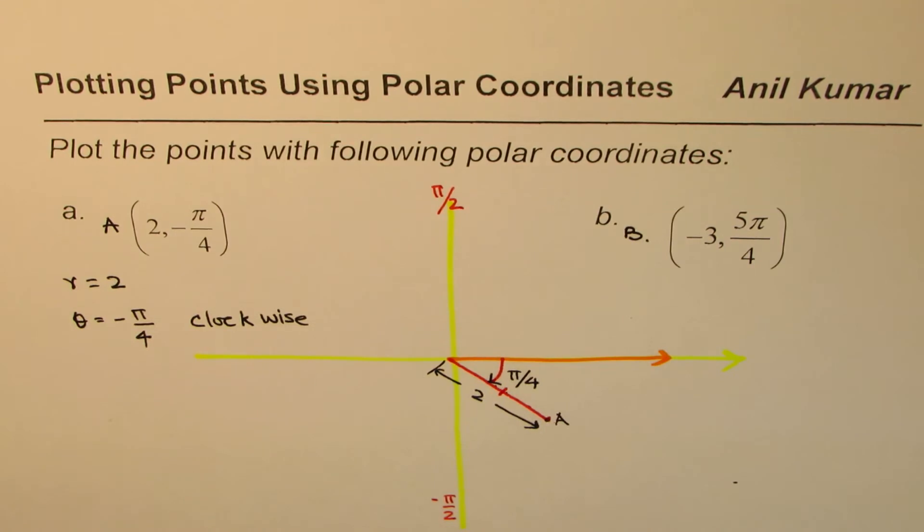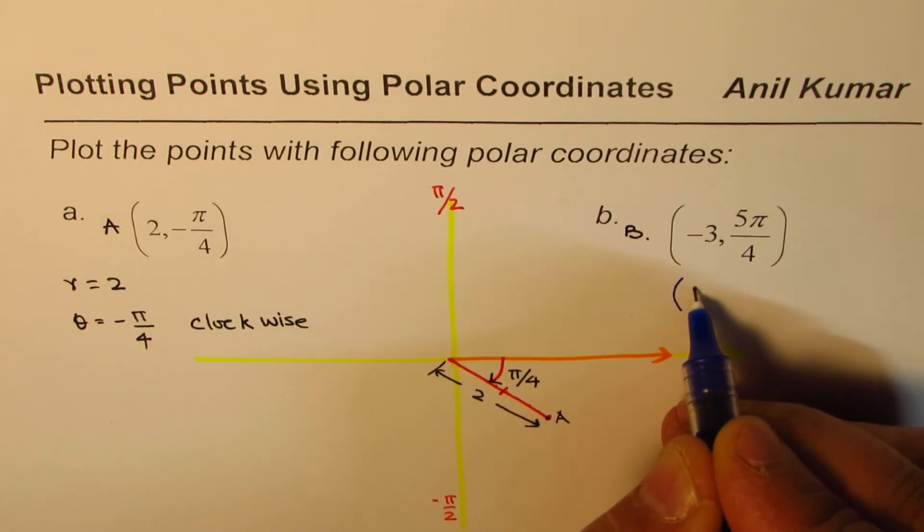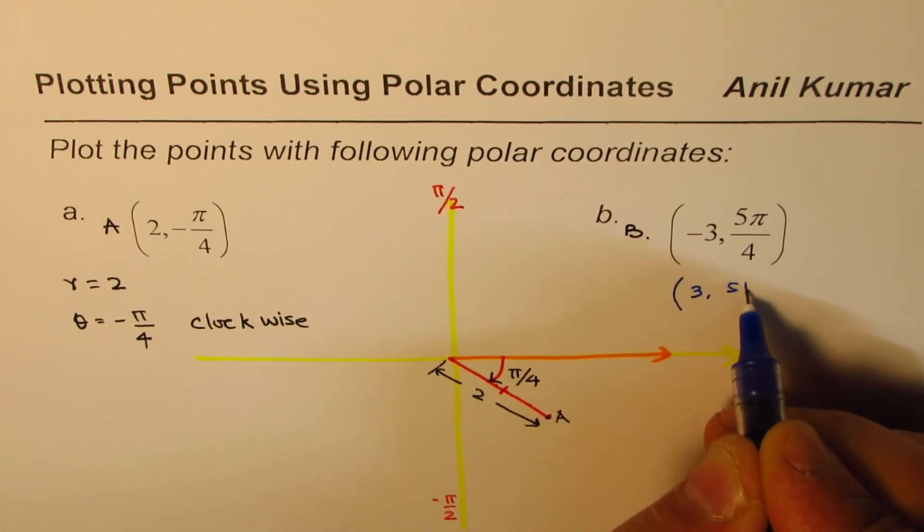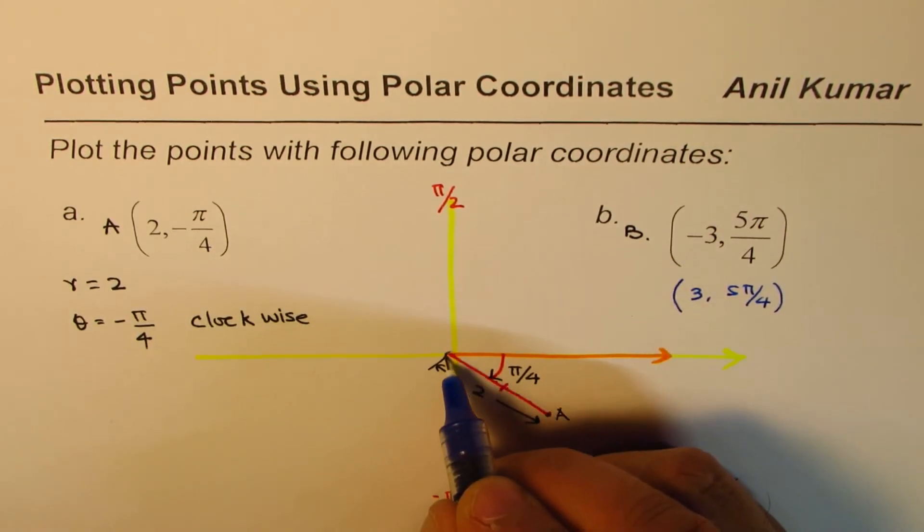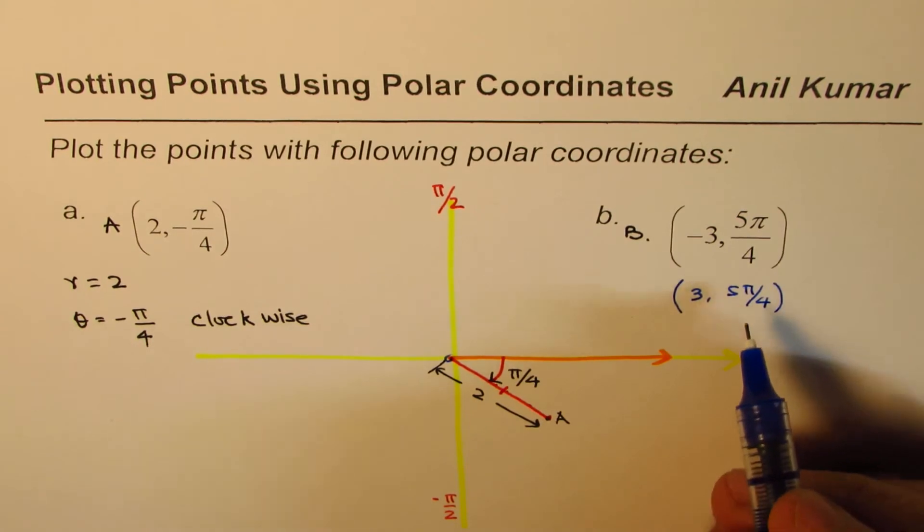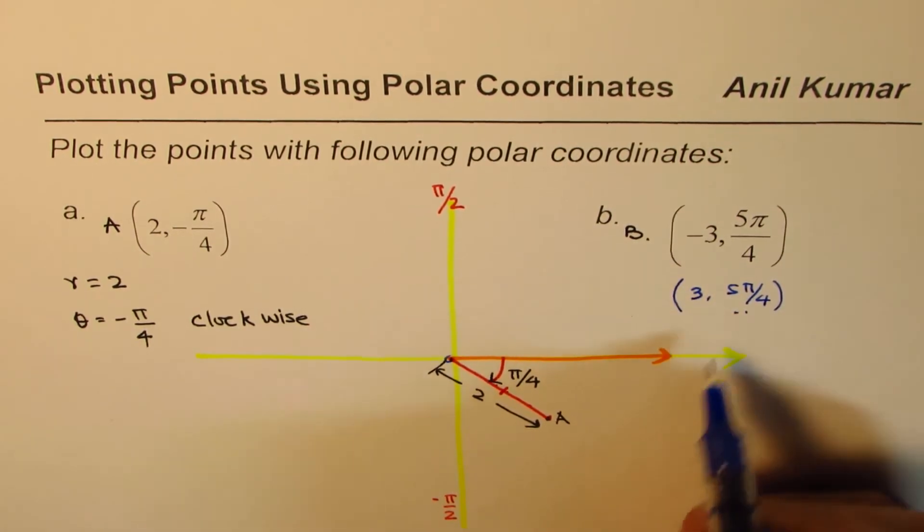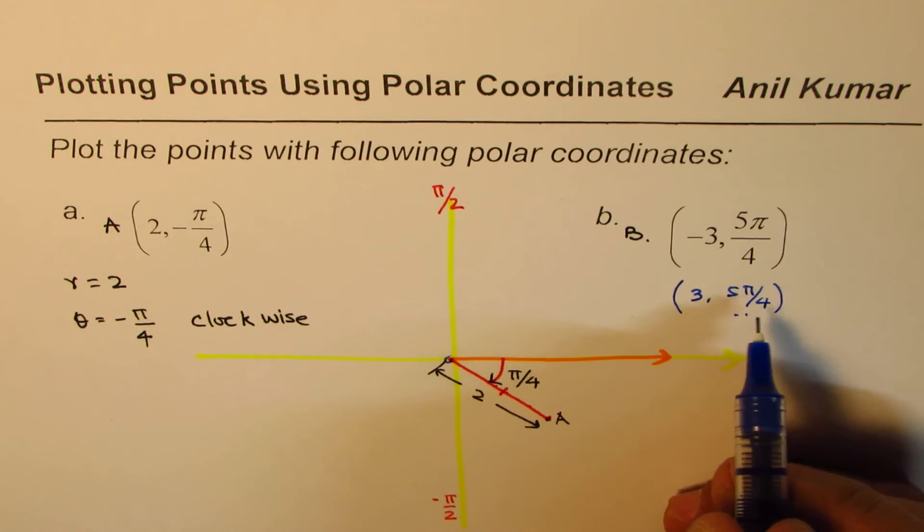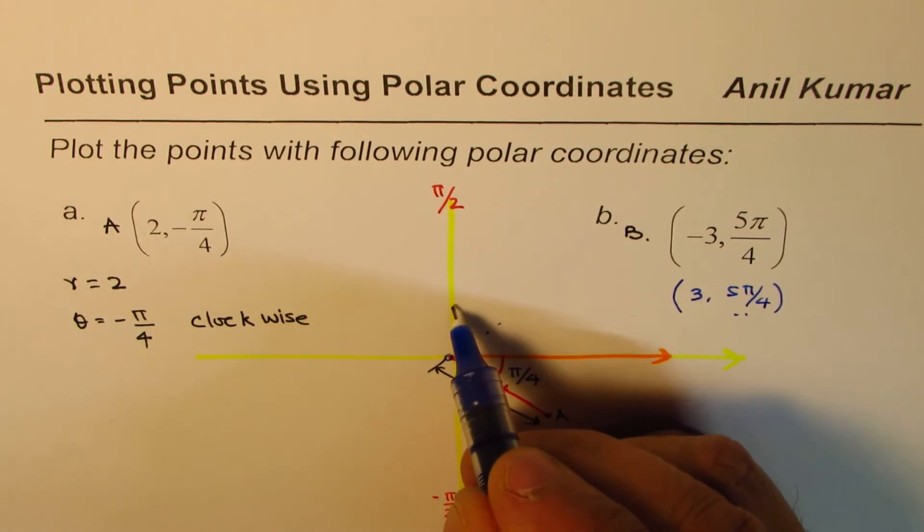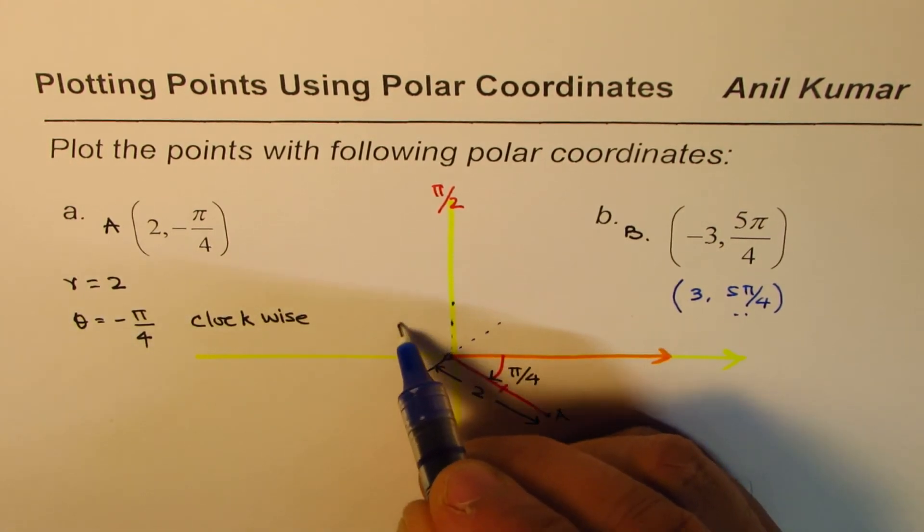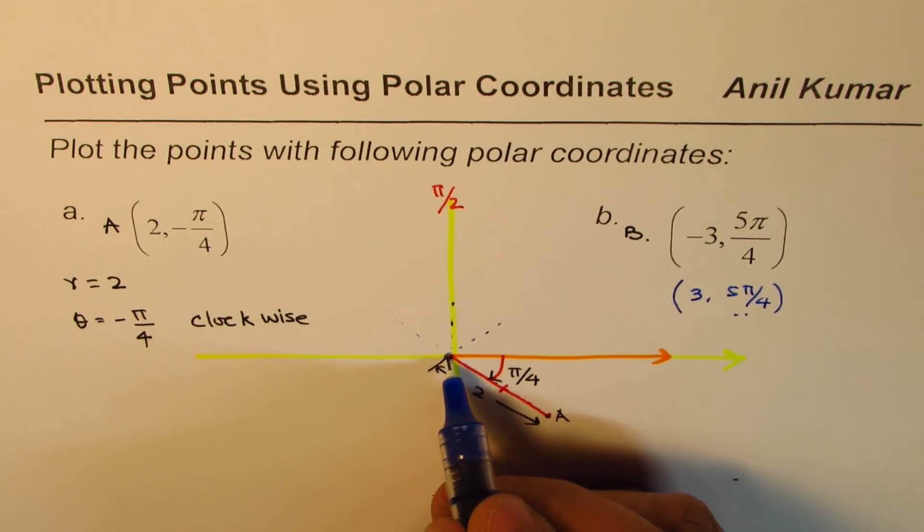The concept here is that negative is kind of reflection of the positive about the origin. So what we will do here is that we will plot a point which will be actually (3, 5π/4) and then we'll see its reflection about the origin. First always look for the angle and sketch the ray. The angle is 5π/4.